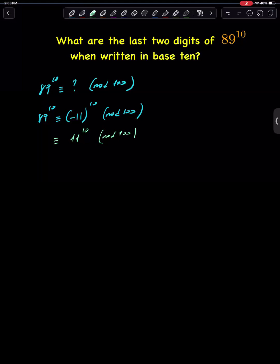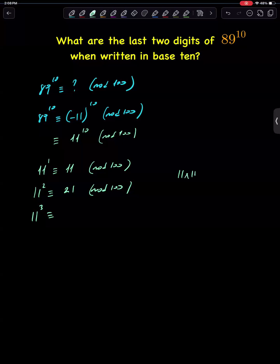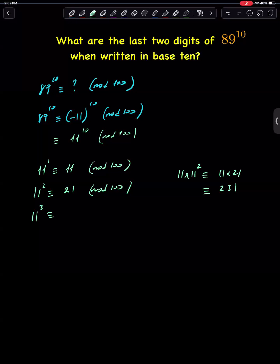Now we are looking for 11 to the power of 10. 11 to the first power is congruent to 11, mod 100. 11 squared is 121, which is congruent to 21, mod 100. 11 cubed is congruent to 11 times 11 squared, which is congruent to 11 times 21, which is 231, which is congruent to 31, mod 100.